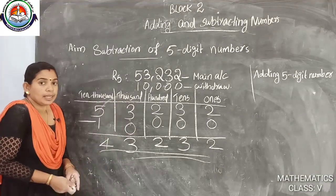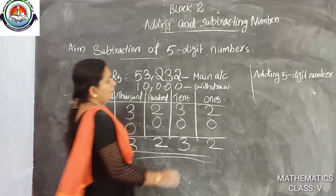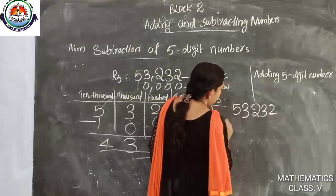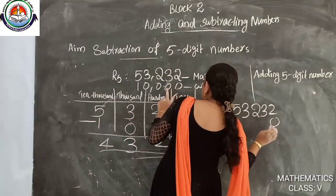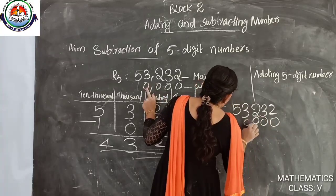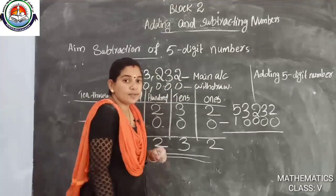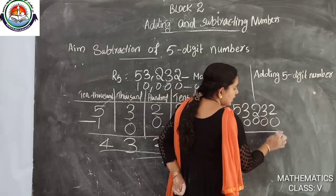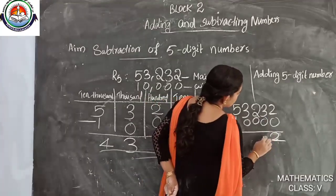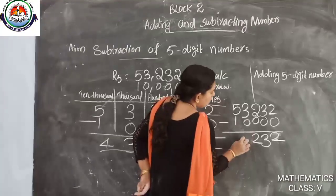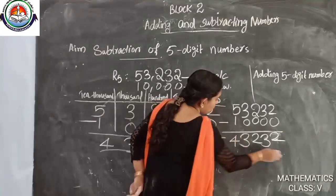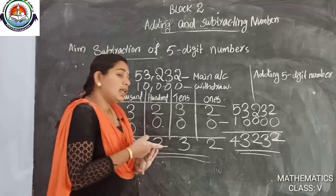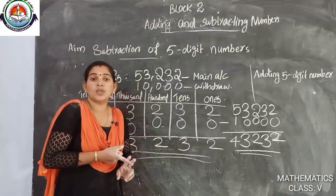Now we check without the place value chart. We write 53,232, then below it from the right side we write the digits of 10,000: 0, 0, 0, 0, and 1. Then 2 minus 0 is 2, 3 minus 0 is 3, 2 minus 0 is 2, 3 minus 0 is 3, and 5 minus 1 is 4. The answer is also 43,232. Using abacus, using place value chart, and without — all three methods give the same answer.